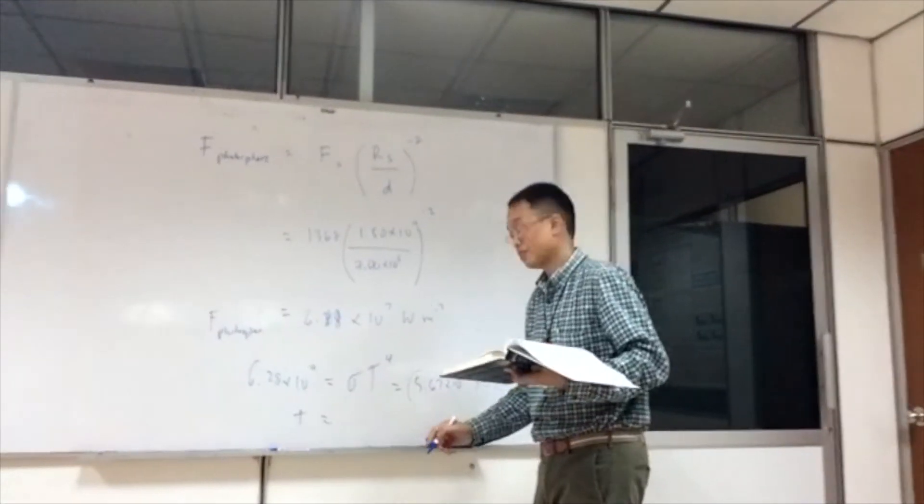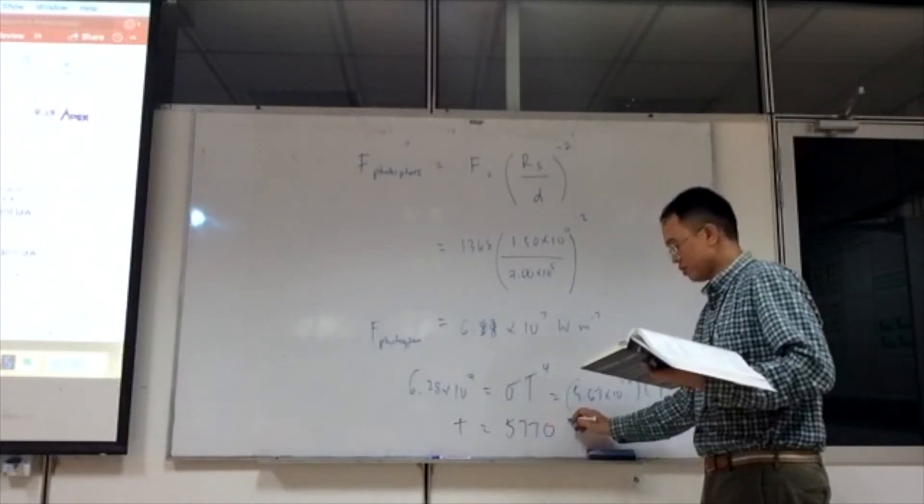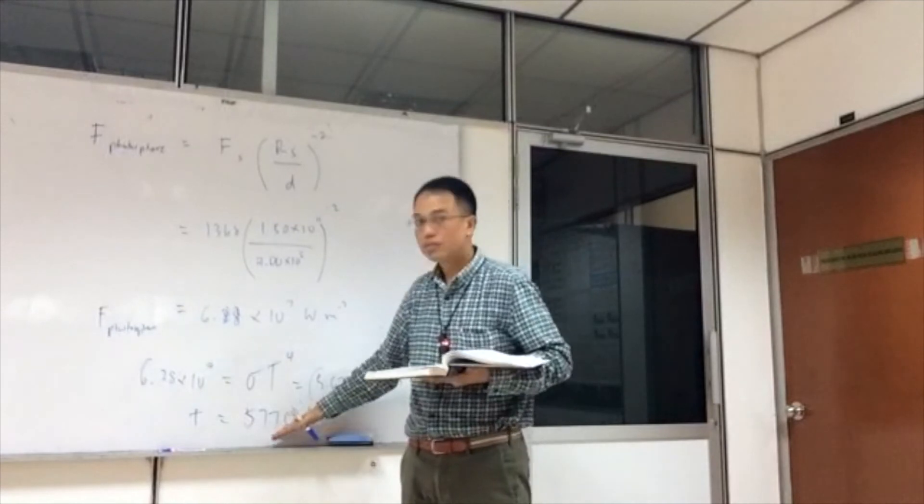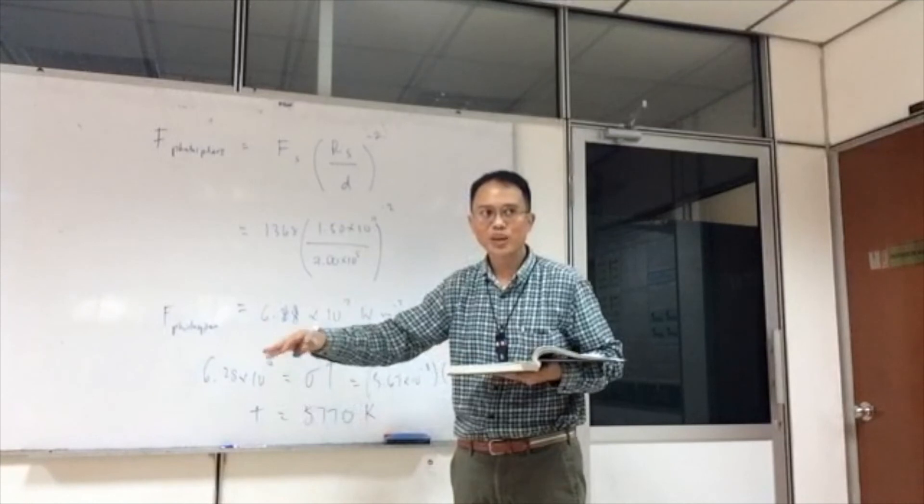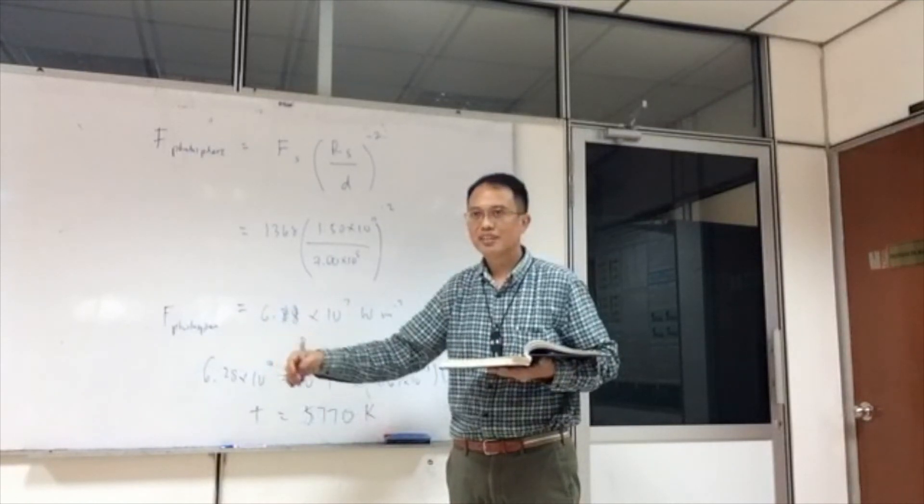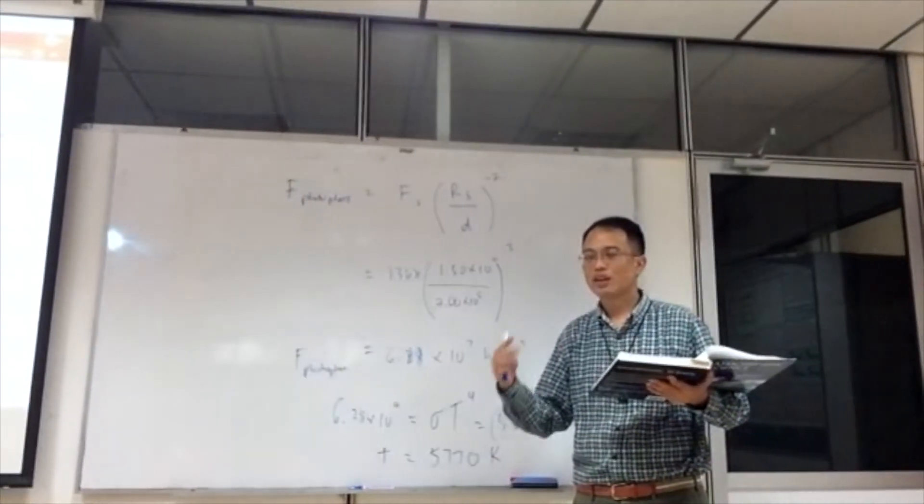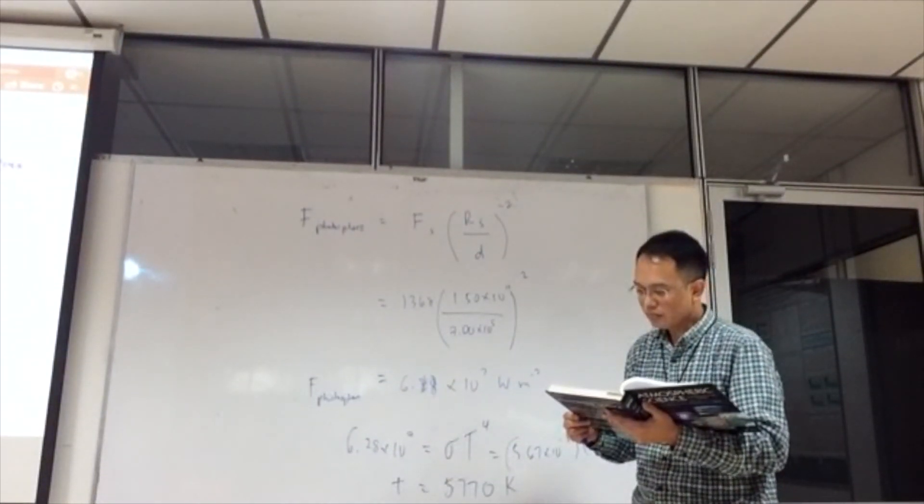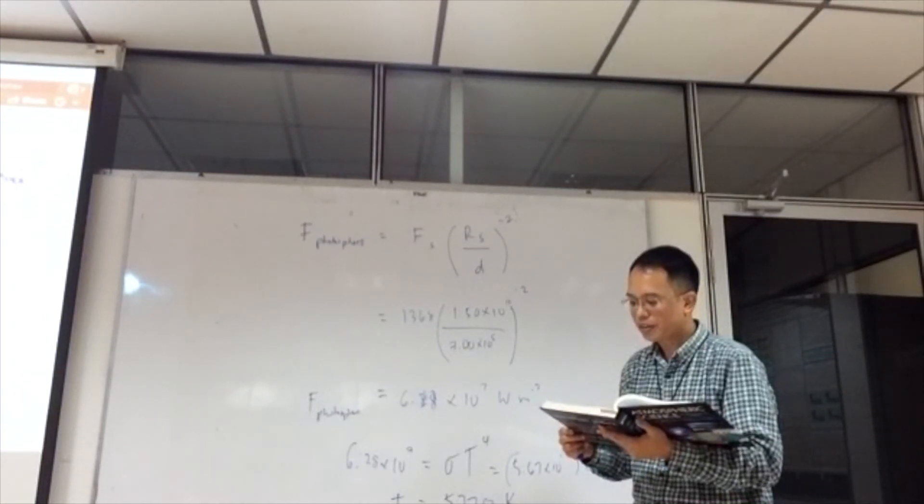So the temperature is about 5770 Kelvin. Now this is another temperature for the sun. Compare this with the temperature we calculated before using Wien's displacement law. What was that? That was 6100. This is 5770, about the same value, plus minus 300 Kelvin. But it is slightly different because the spectrum of the sun's emission differs slightly from the blackbody spectrum.